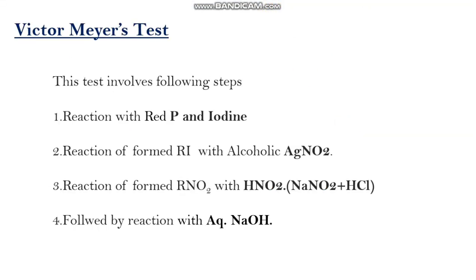Next is Victor Meyer's test. This test is based on the difference in behavior of nitroalkanes that are derived from primary, secondary and tertiary alcohols towards nitrous acid. This test involves the following steps. In the first step, the alcohol is treated with red phosphorus and iodine, and that reaction results in alkyl iodide.